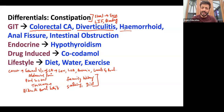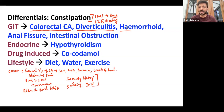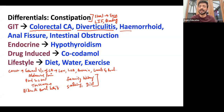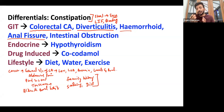Another differential is hemorrhoids. Patients can have fresh bleeding per rectum, sometimes pain, and sometimes a feeling that something is hanging out from the anal area. With per rectal examination you can make the diagnosis and treat accordingly. Anal fissure is another cause — patients have constipation because passing stool is painful, so they avoid it. This becomes a vicious cycle, which is why they end up constipated.